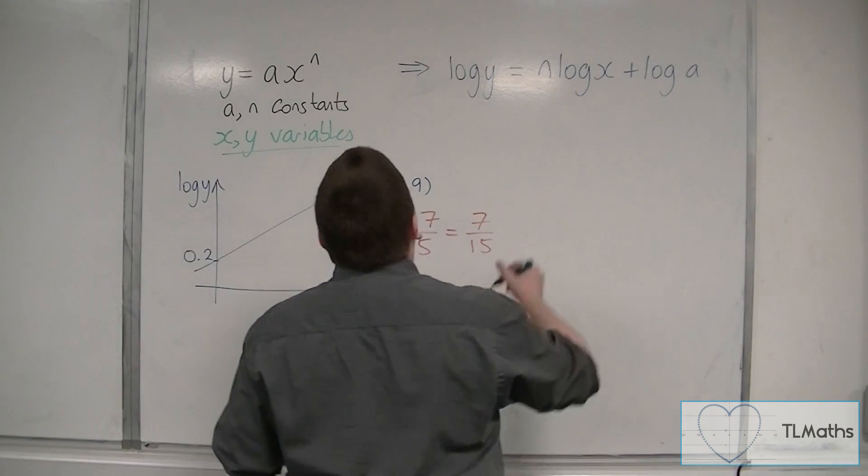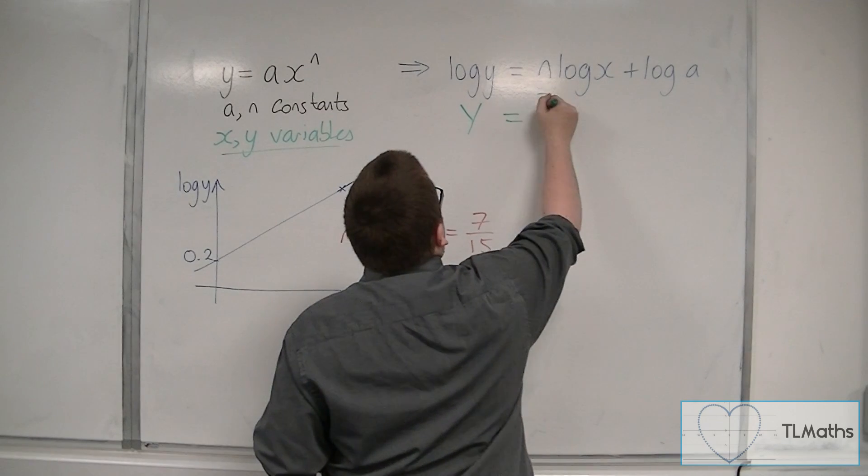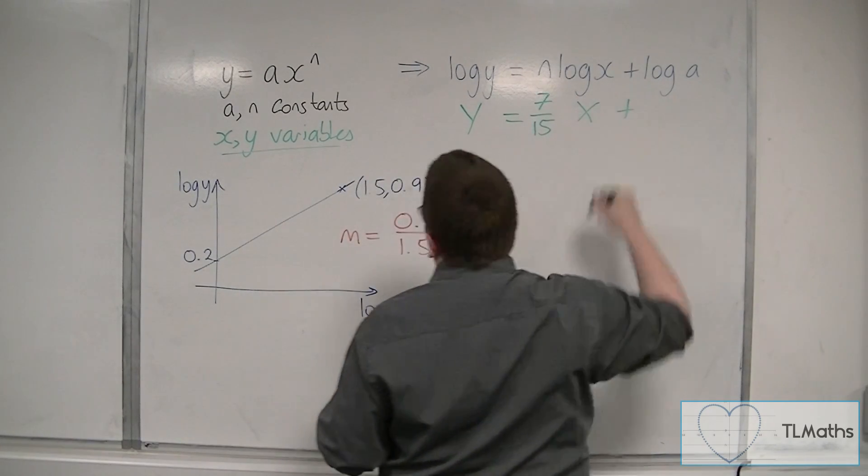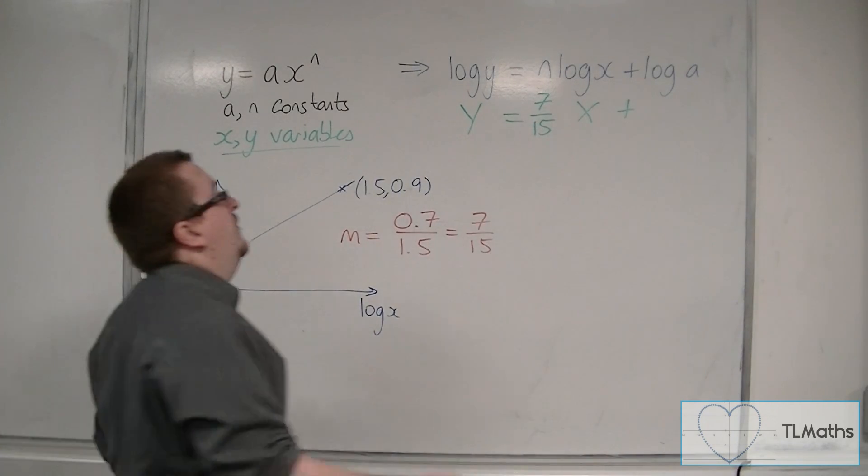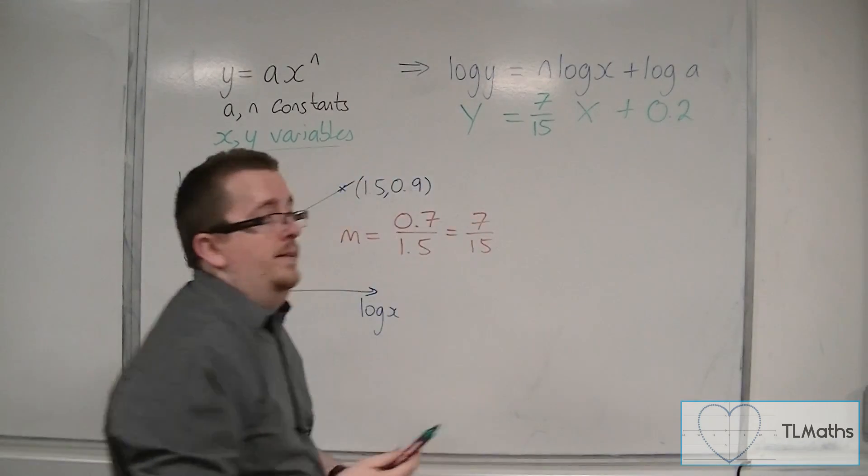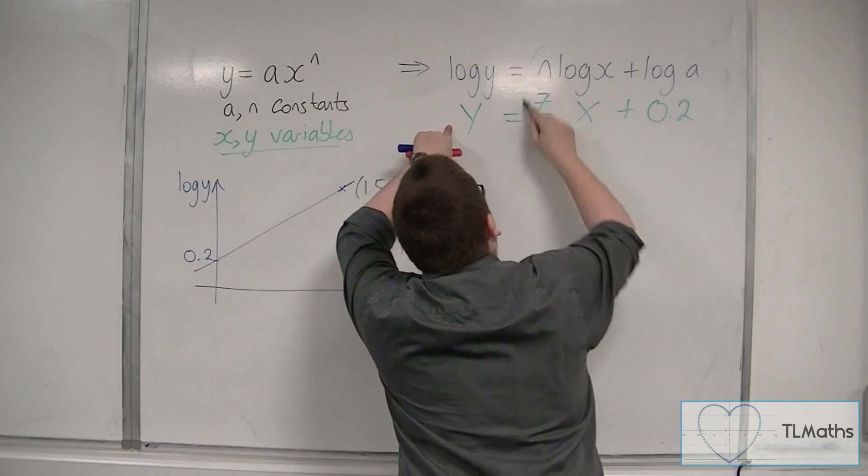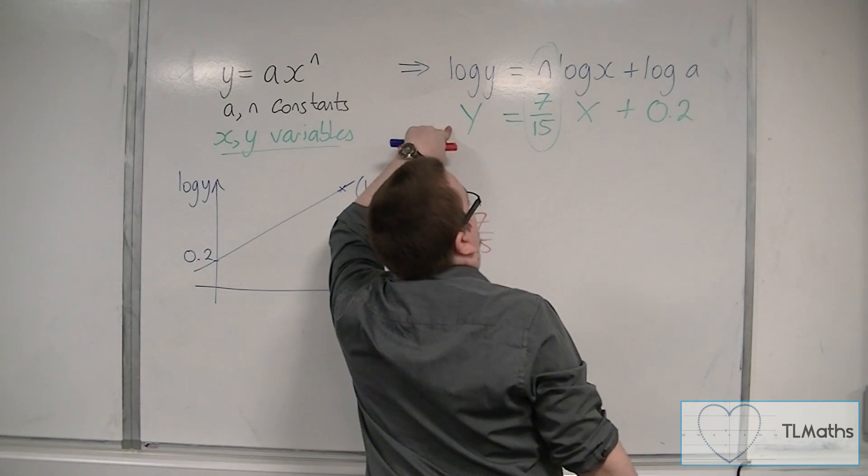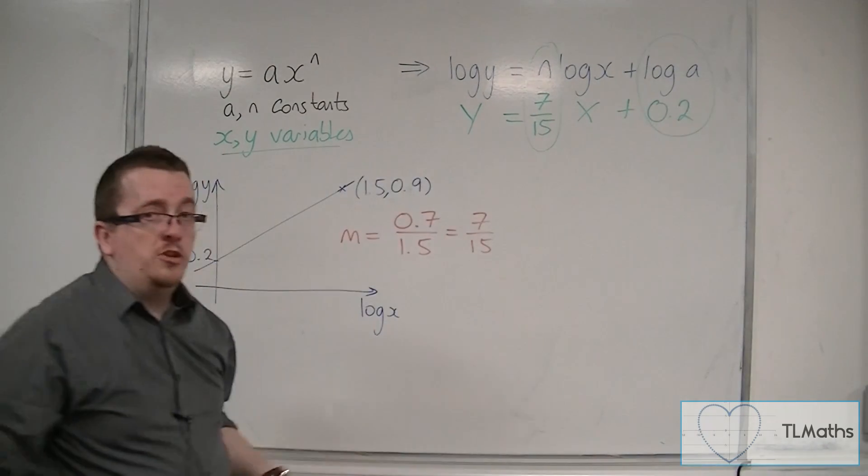So, what I can say is that y is equal to 7 fifteenths x plus the y-intercept 0.2. Now, if I compare this equation with this equation, then that must mean that the n must be 7 over 15, and the log a must be 0.2.